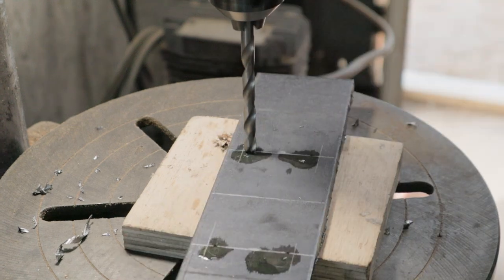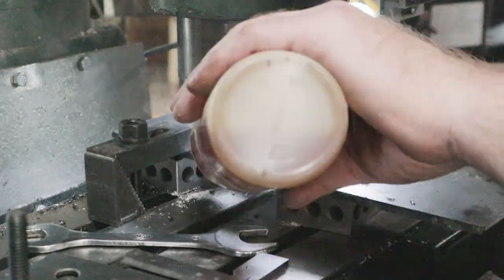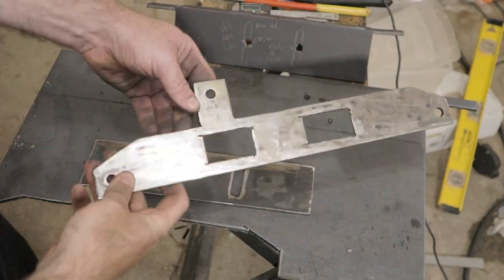Some parts need slots in them, so I drill a hole at both ends and use my mill to cut them out. When the parts are finished, I use a flap disc on an angle grinder to smooth them out and grind off the mill scale.